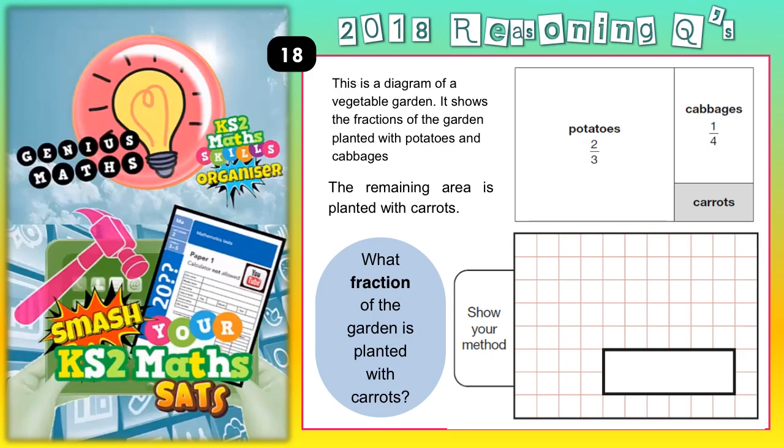Welcome Satsbusters to question 18. We've got a vegetable garden — it shows the fractions of the garden planted with potatoes and cabbages. The remaining area is planted with carrots, and we've got to work out what that remaining area is.